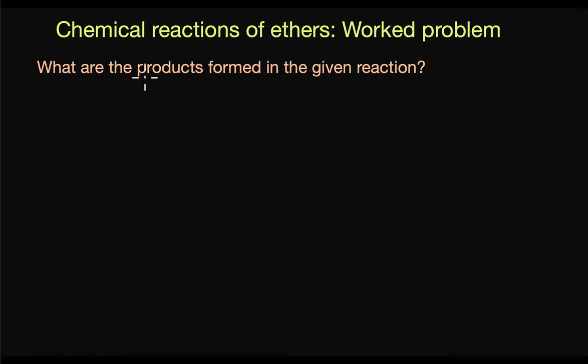In this question we need to identify the products that are formed in this particular reaction. So here we have an ether and we are treating it with concentrated HBr. In the previous question we saw that the ether had a methyl and a secondary group. But here we have a tertiary group and a primary group. Now the first step is the same where the protonation of the ether takes place.